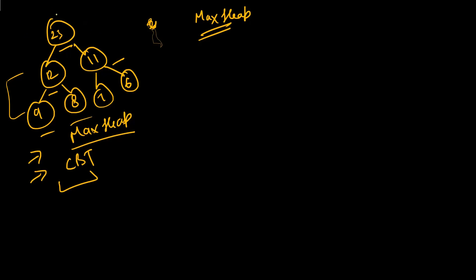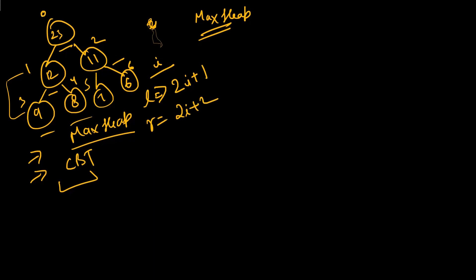If we have to represent this max heap in array format with indices 0 through 6 — if a parent is at position i, the left child will be at position 2i + 1 and the right child at 2i + 2. For example, if the parent is at index 0, the left child is at 2×0+1 = 1 and the right child is at 2×0+2 = 2. We'll be using these formulas in our implementation.